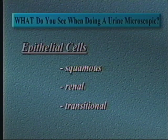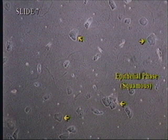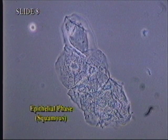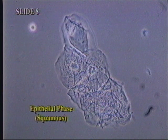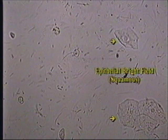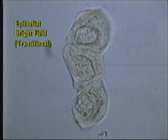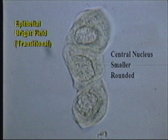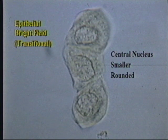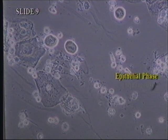Let's look at some epithelial cells. There are three types that need to be recognized and reported: squamous, renal, and transitional. The first are squamous epithelial cells — this is a low power view under phase, and here is a higher power view. They are large, irregularly shaped cells with a small nucleus. It is not a significant finding to see these cells in sheets or clusters. The second type to be differentiated is the transitional epithelial cell. Transitional cells have a more central nucleus and are smaller and more rounded than squamous cells.